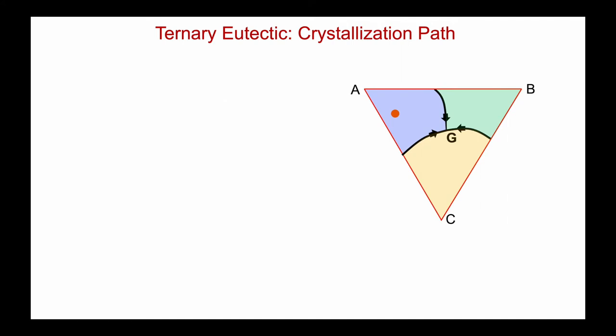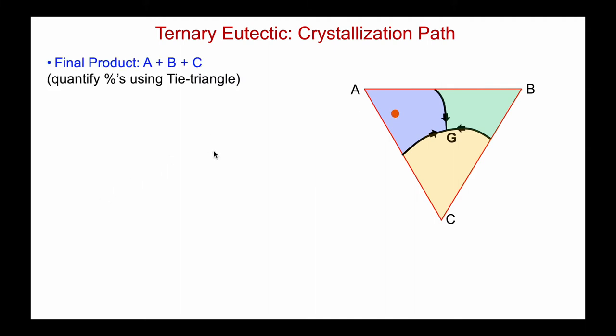Let's illustrate the use of this through a crystallization path. We'll take the ternary eutectic liquidus projection and do a crystallization path for the composition shown here in orange. First of all, what do I get at the end? I just look at the solid-state equilibria — there's no solubility, so it's the pure species, and I'm going to end up with solid A plus B plus C.